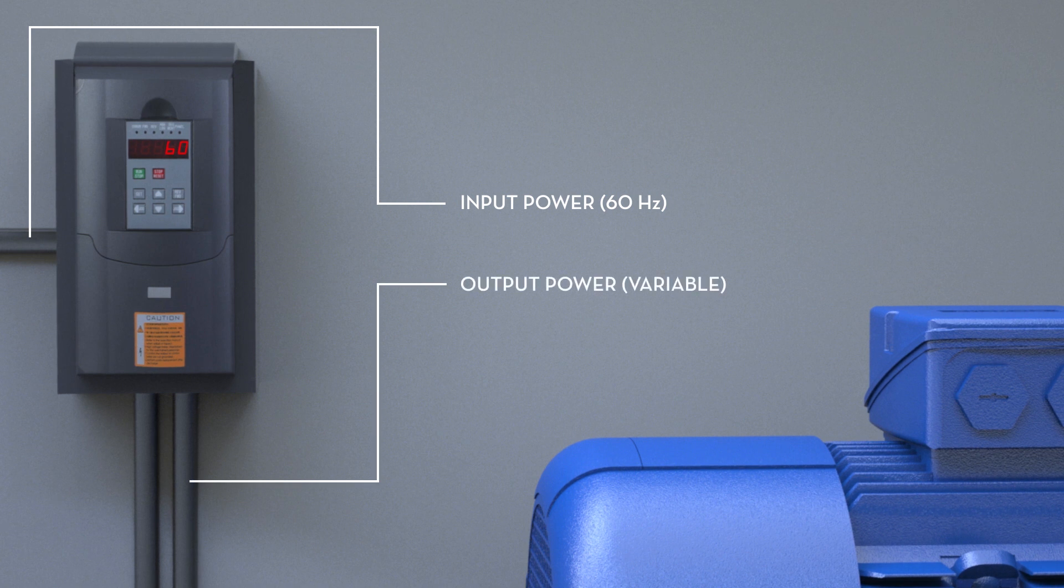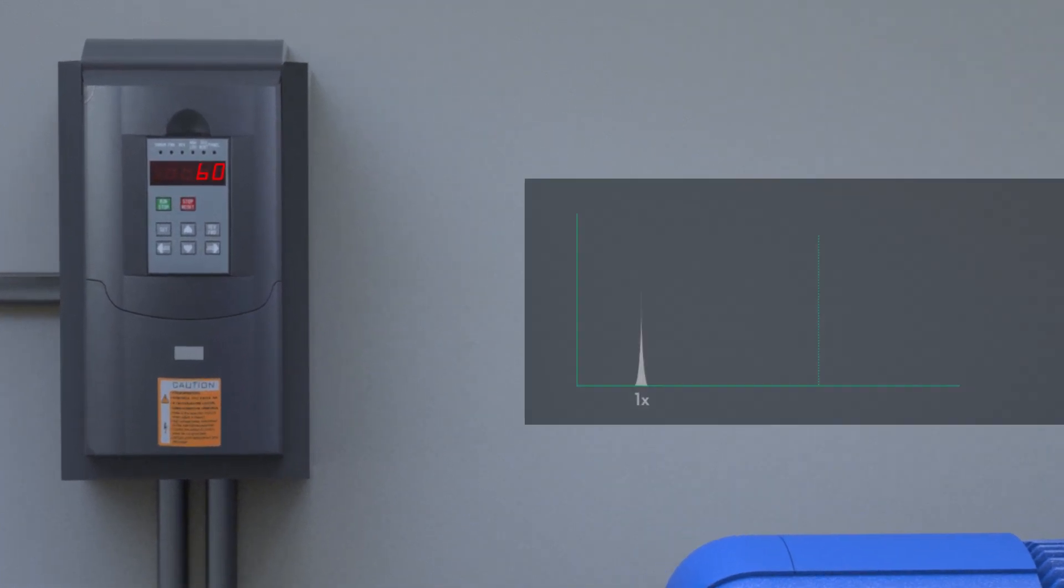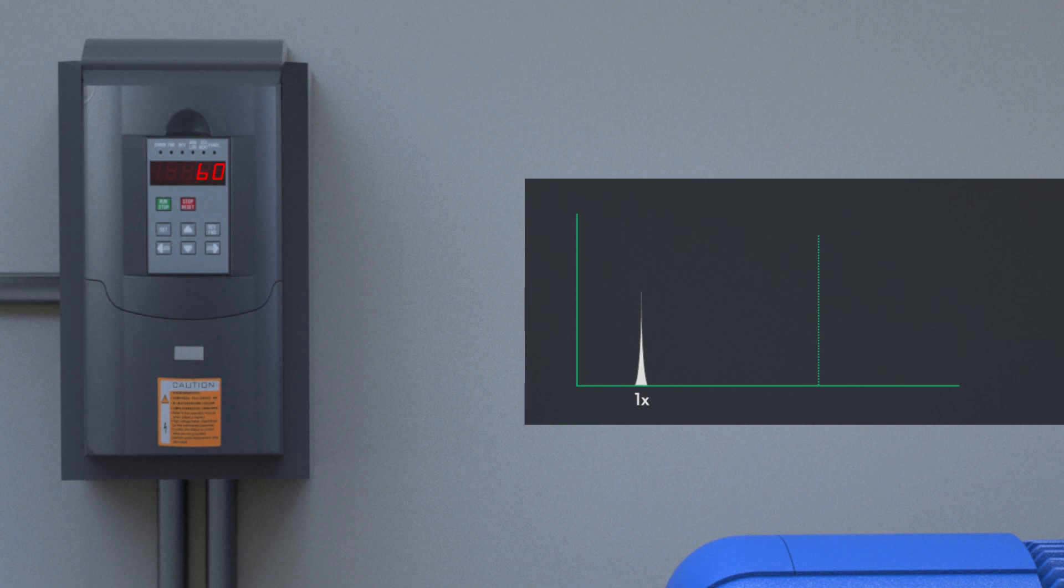In order to calculate the RPM of a VFD, you must locate the 1x frequency on the spectrum. 1x refers to the vibration at the same frequency as the run speed of the machine.